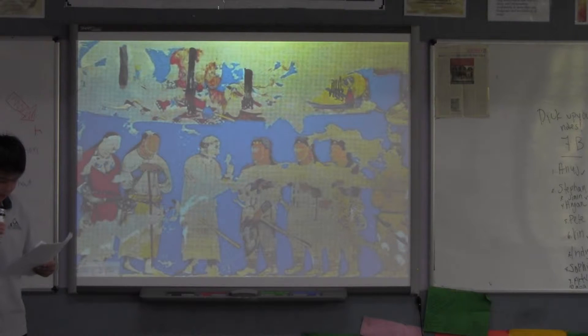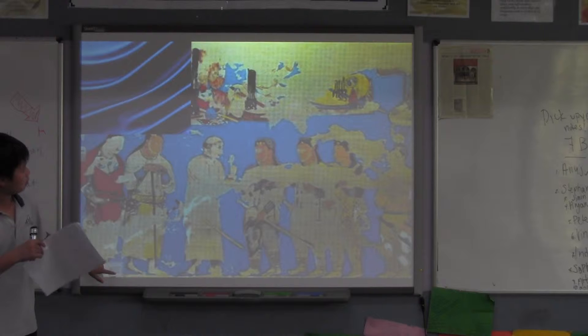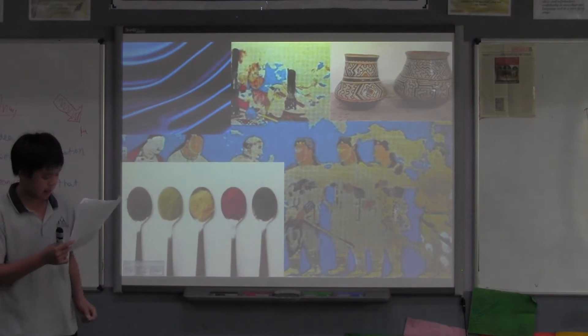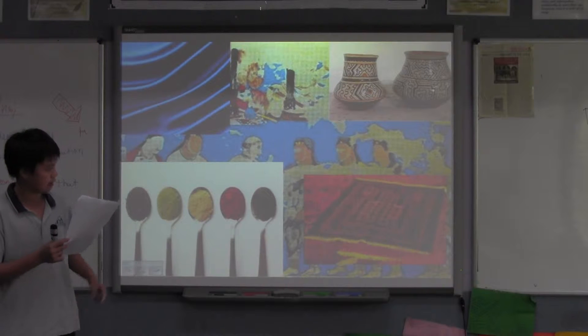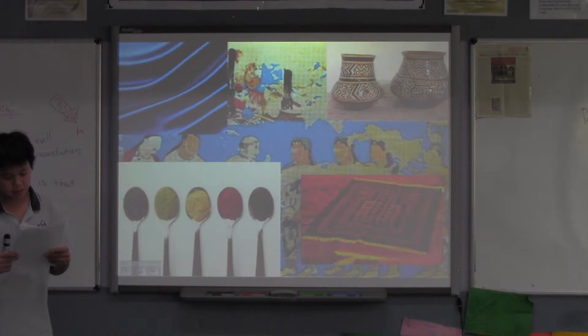In the ancient days they traded silk, porcelain, and pots, spices, carpets, and other items such as glass, silk, horses, copper, and other luxurious items.